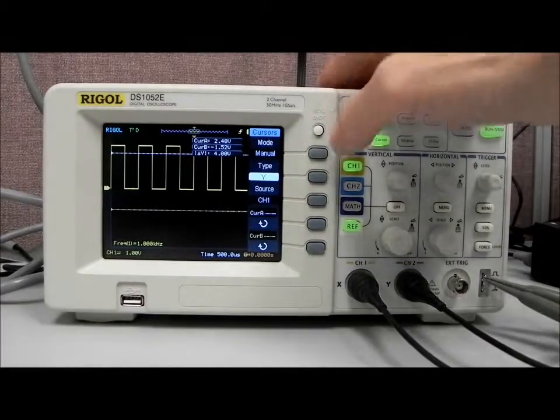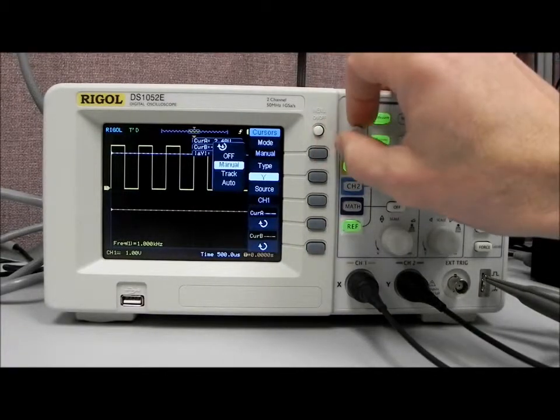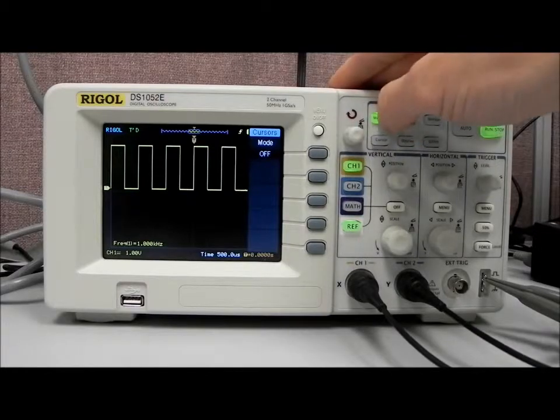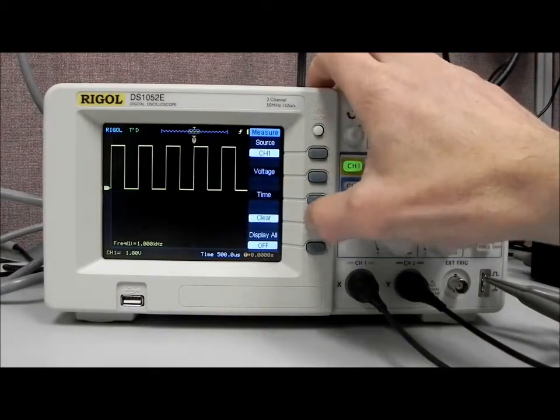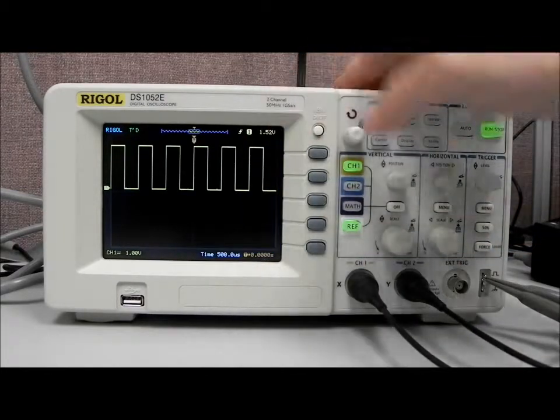Now let's take a look at the reference mode. So we're going to get rid of our measurements. We're just going to go up to cursor and off. And then let's disable our measurements as well. Clear. And now we just have channel 1.